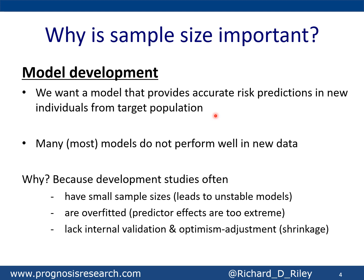Indeed, many models suffer from the problem that they don't perform well in new data, and that is usually due to low sample sizes, which leads to instability — chance models which are not going to generalize — and overfitting, where your estimates or predictor effects are too extreme, and a lack of researchers using methods to adjust for optimism, also known as shrinkage methods.